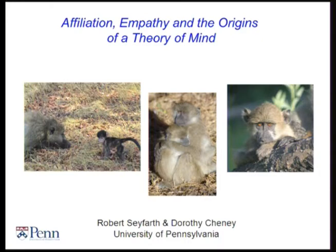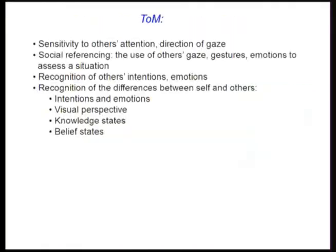You have to have a theory of mind to decide what Maxie will or will not do. This is the classic experiment first done on kids, and since then there's been an industry around the world trying to determine how theory of mind develops in children and whether having a theory of mind is a unique feature of human intelligence or whether we can find it in other species.